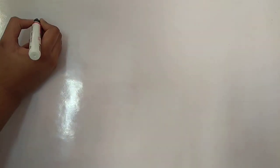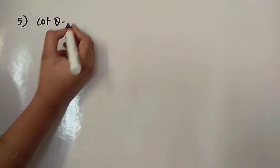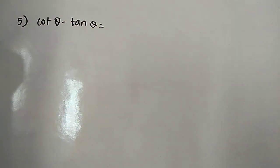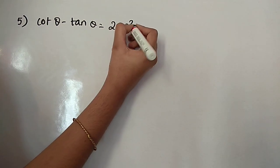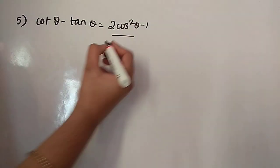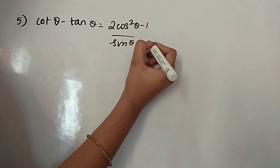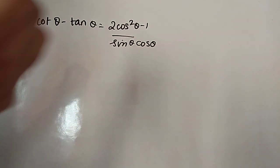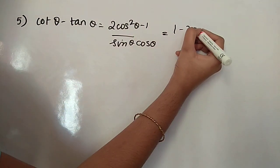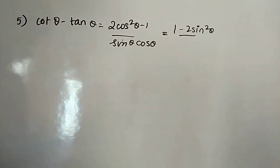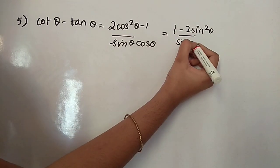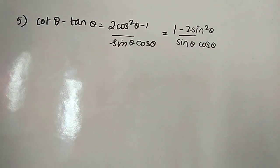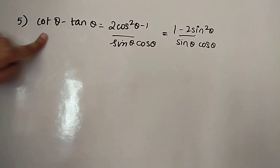Fifth question: we have to prove that cot theta minus tan theta equals (2 cos squared theta minus 1) divided by sin theta cos theta, which also equals (1 minus 2 sin squared theta) divided by sin theta cos theta. We take the LHS: cot theta minus tan theta.